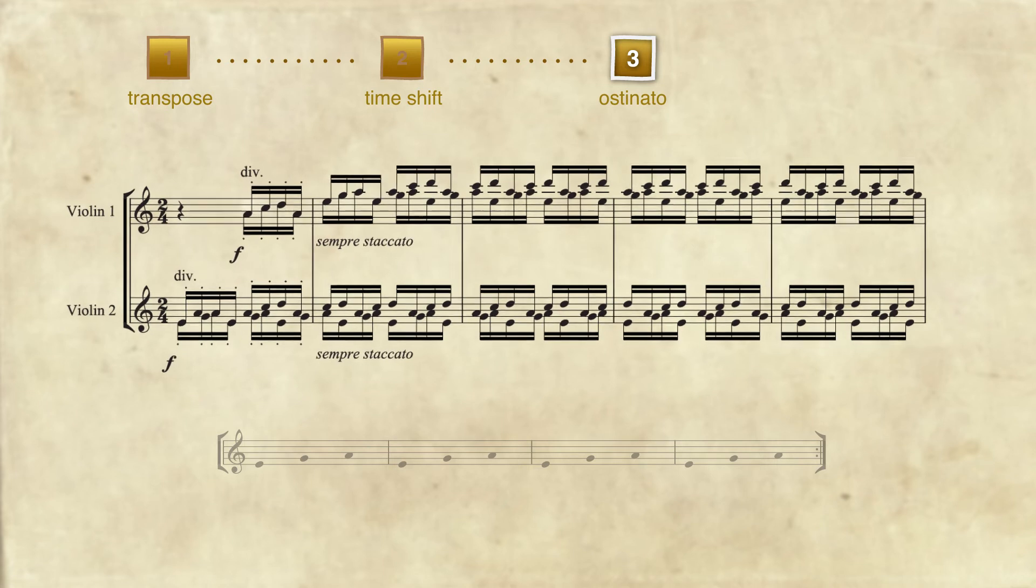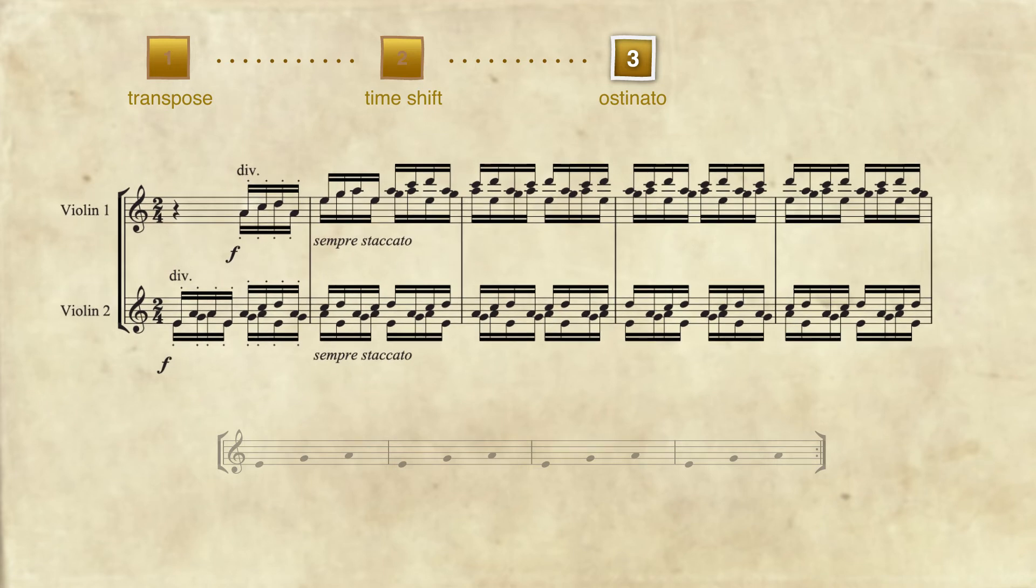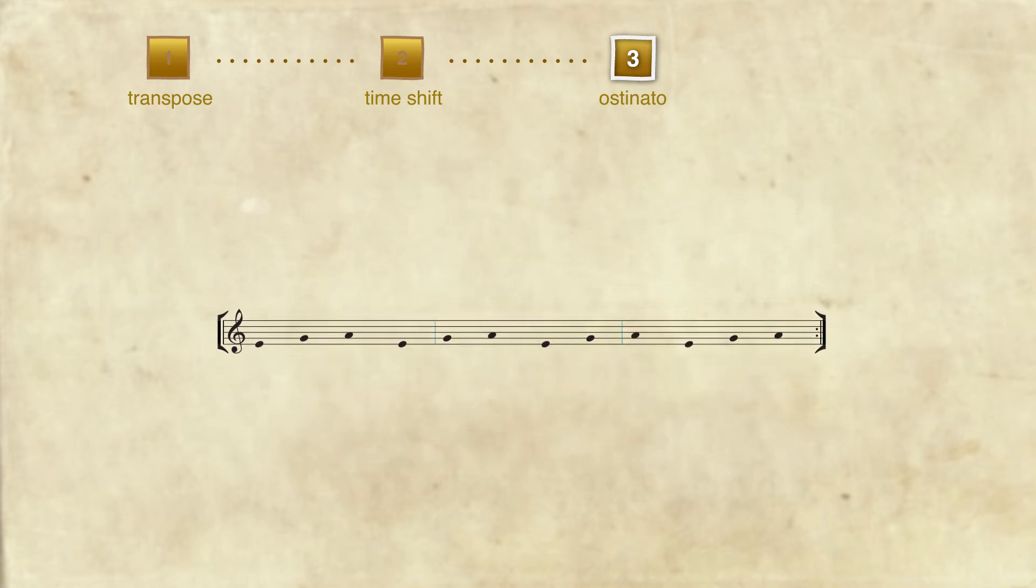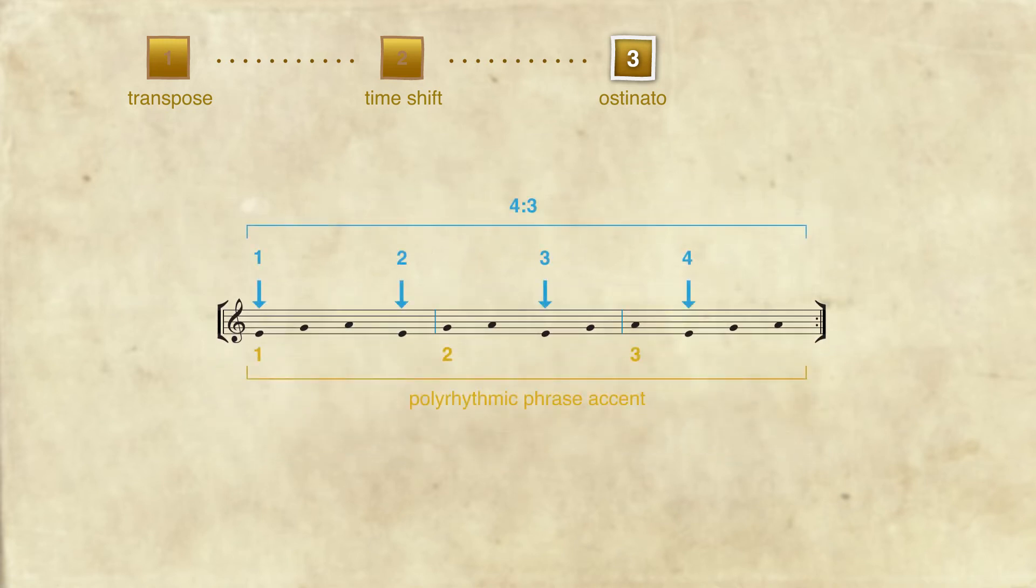Recall from the score that these ostinatos are in a base four rhythm. So as the ostinato proceeds, a natural four against three polyrhythm arises.